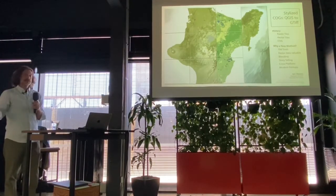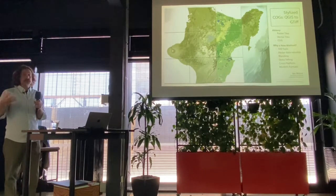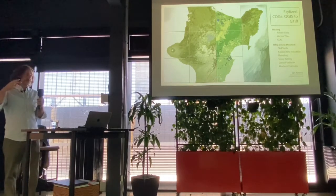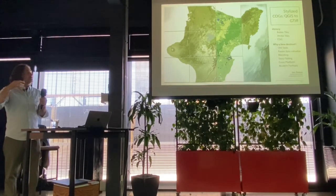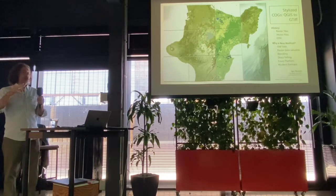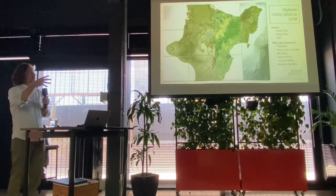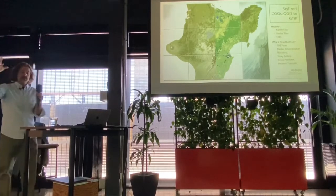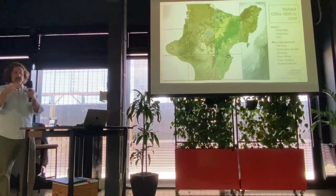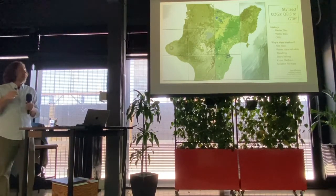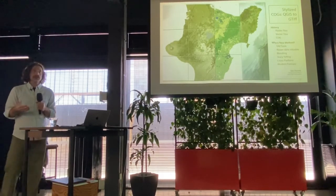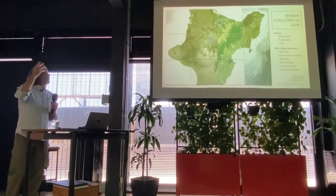Very brief history, just to understand the context of where we're going. Raster tiles came out around 2011–2012; Development Seed started using them. They're also known as slippy maps. Raster tiles were really innovative at the time — you could take all your GIS data, mash it together into beautiful visualizations, and then cut those visualizations up into 256×256 tiles for each zoom scale you were building.